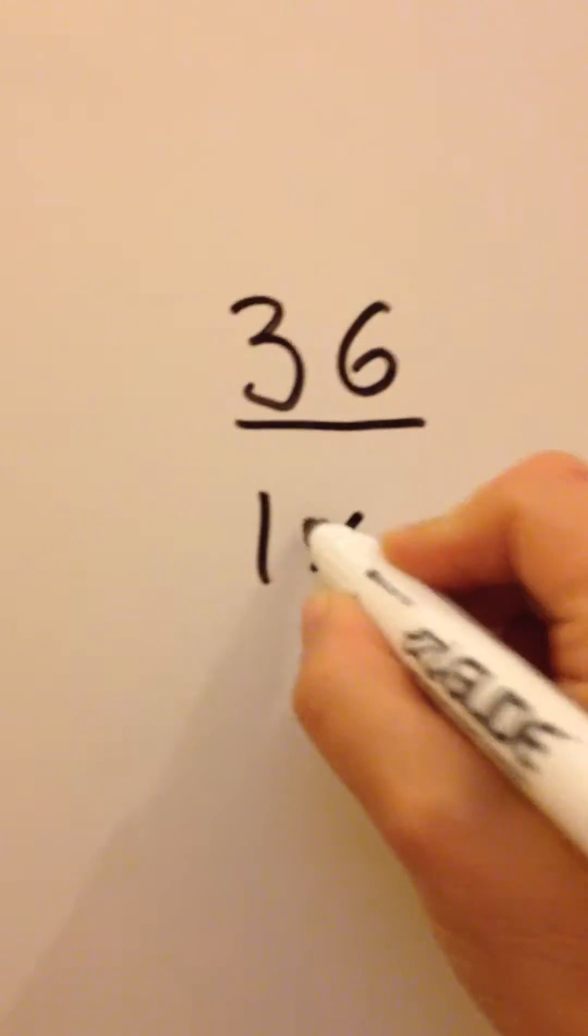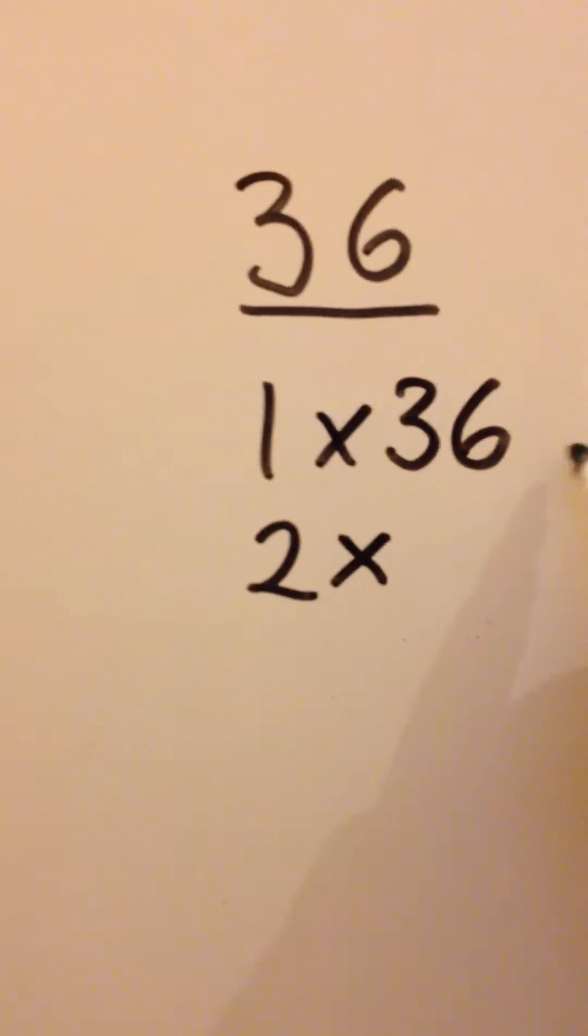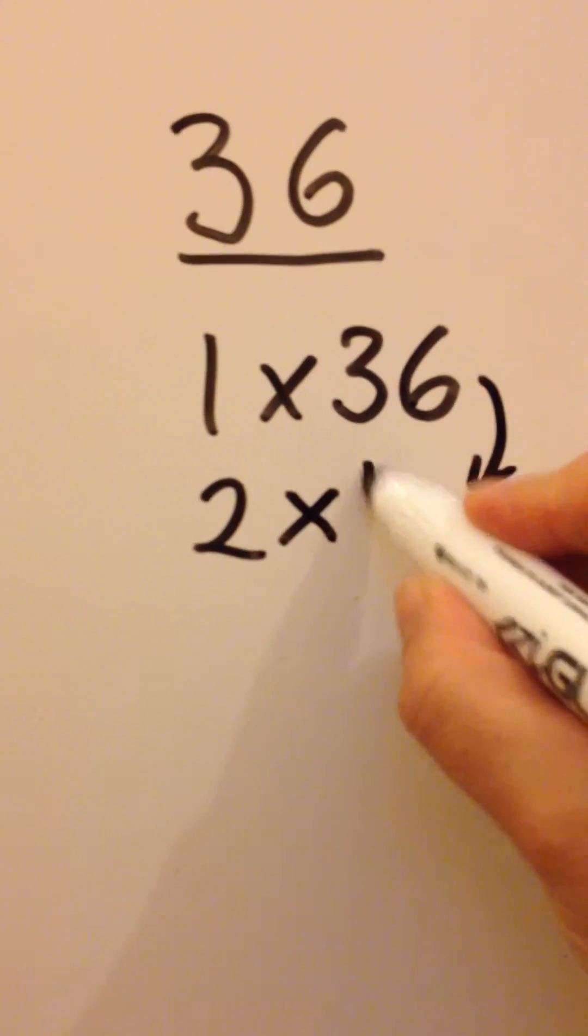First of all, 1 times 36. It's an even number, so we can do 2 times half of this number, which is 18.